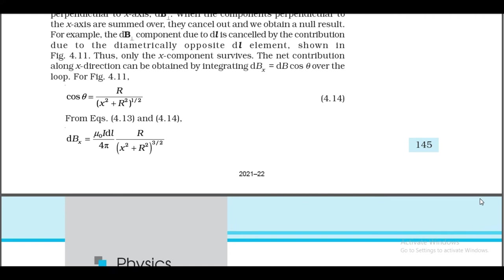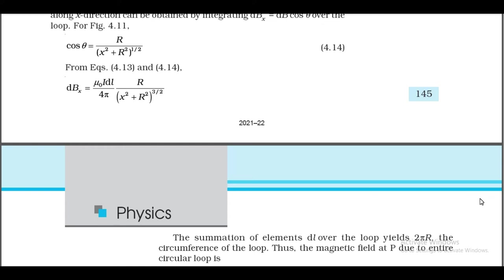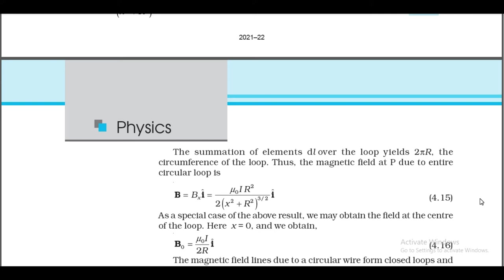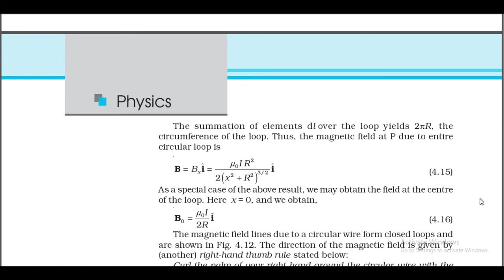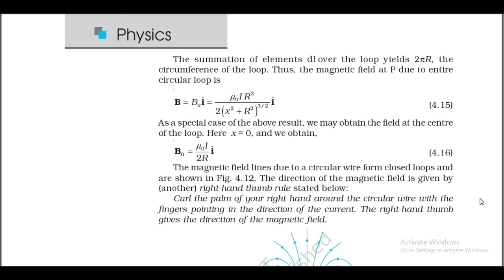The net contribution along x: dB_x = dB·cosθ, where cosθ = R/√(x² + R²). Thus dB_x = (μ₀i·dl)/(4π) · R/(x² + R²)^(3/2). Summing over the entire loop (circumference = 2πR), the magnetic field at P is: B = B_x î = [μ₀iR²/(2(x² + R²)^(3/2))] î. As a special case, at the center of the loop (x = 0): B₀ = (μ₀i)/(2R) î. The magnetic field lines due to a circular wire form closed loops.